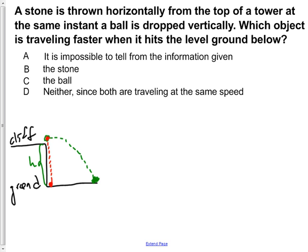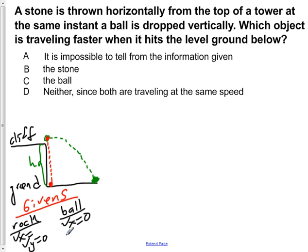We're going to write down our given information. For the rock, Vx has some value and Vy is zero. For the ball, Vx equals zero and Vy equals zero.